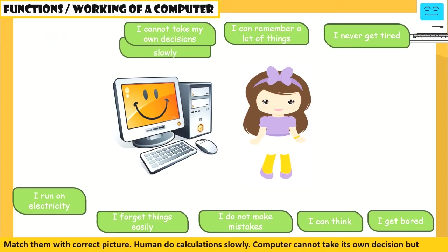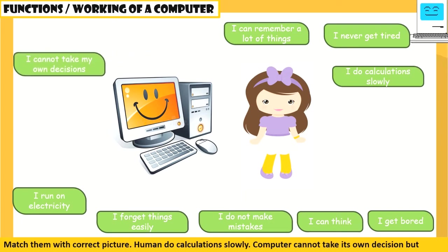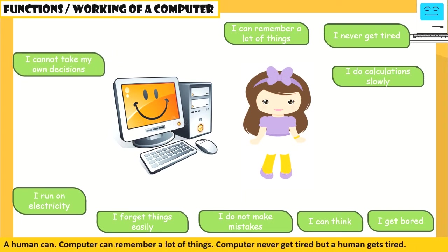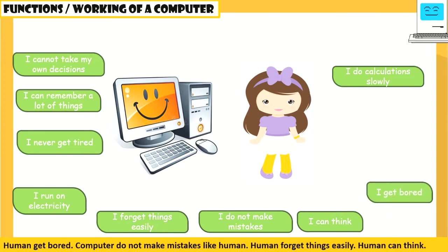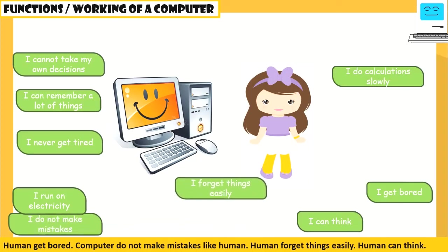Humans do calculations slowly. A computer cannot take its own decision, but a human can. A computer can remember a lot of things. A computer never gets tired, but a human gets tired. Humans get bored. Computers do not make mistakes like humans. Humans forget things easily. Humans can think.